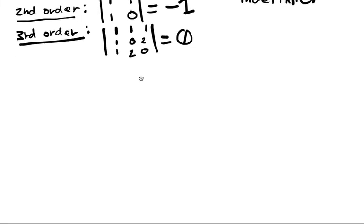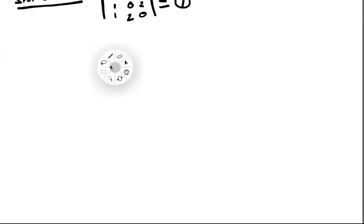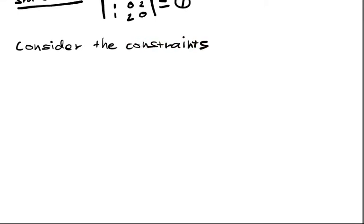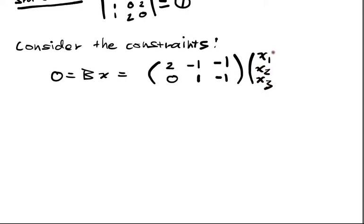But now let's consider a situation where we have a linear constraint or a system of linear constraints. So consider now the constraint set. 0 is equal to Bx is equal to... This matrix B is going to be 2, negative 1, negative 1, 0, 1, negative 1. Well, I've got this, and I've got x1, x2, x3. I want to know the definiteness of our quadratic Q of x equals x transpose A, where A is above.